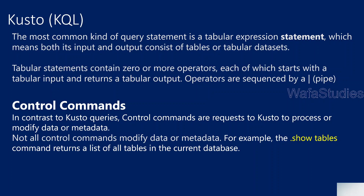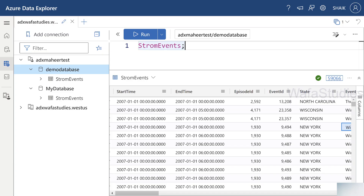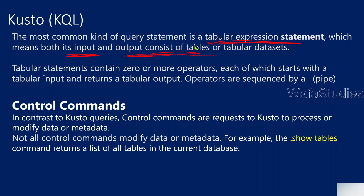Back to the presentation. The most common kind of statement is the tabular expression statement. A tabular expression statement takes a table as input and gives you a table as output. We can use operators on top of tabular statements. When an operator is applied, it takes a table as input and returns a table as output. Every operator is separated by a pipe symbol.